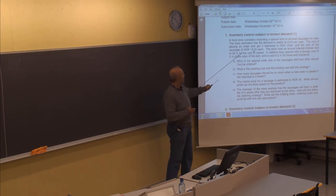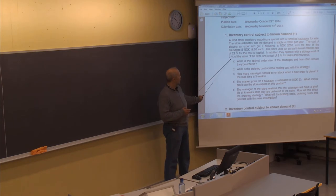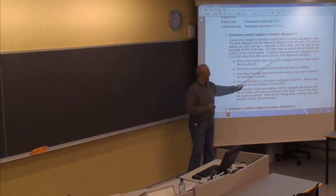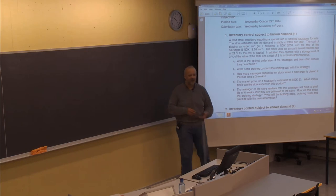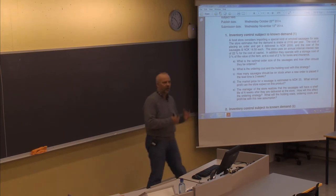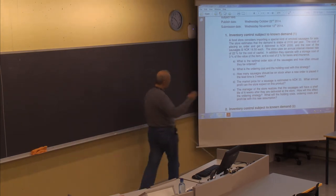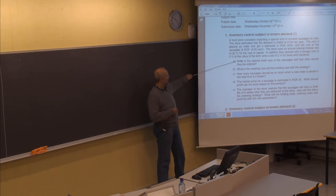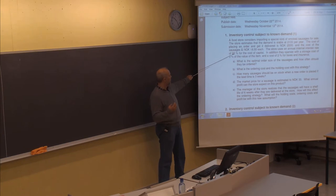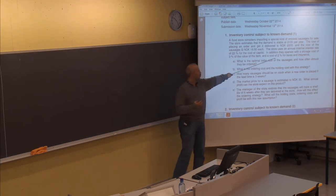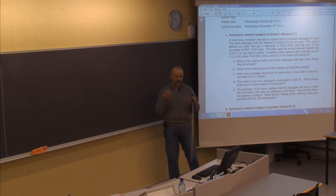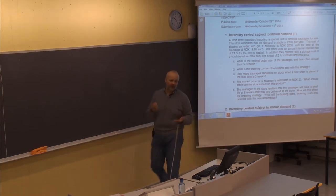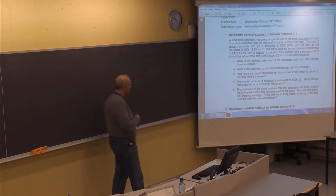The cost of the sausages will be $1,850 each. They use an internal interest rate of 22% for the cost of capital, plus a storage cost of 3% and a cost for taxes and insurance of 2%. To calculate the internal interest rate, you need to add all these parts together. Capital cost is only one part — usually the major part, 22% in this case — but you also add 3% and 2% to get the exact value of parameter I, which describes the internal interest rate.